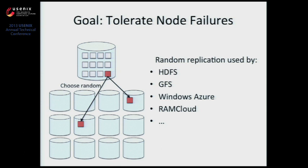The common approach taken by almost all popular cloud storage systems is to randomly spray your data on three machines on different racks. This is prominently used by Hadoop File System, Google File System, Windows Azure, and also by RAM Cloud, which is a system we're developing at Stanford.